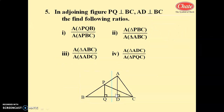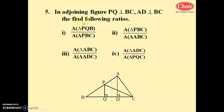In the adjoining figure, PQ is perpendicular to BC, and AD is perpendicular to BC. Then find the following ratios. There are 4 conditions whose ratios we need to find, so we will solve them one by one.